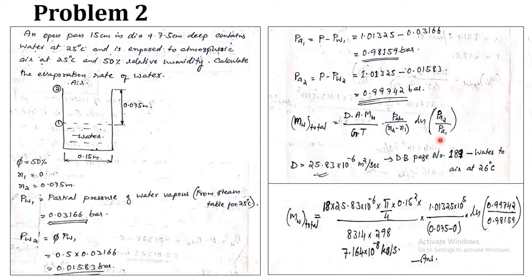The diffusion coefficient for water-air is not given in this problem, so find it from data book page 189: D equals 25.83 × 10⁻⁶ m²/s at 26°C. Substituting all values gives the evaporation rate equal to 7.164 × 10⁻⁸ kg/s.